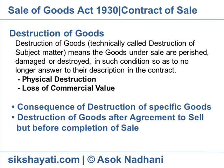Example: On 5th October 2008, K agrees to sell his Toyota car to P for Rs. 4 lakh on 1st December 2008. However, on 15th October 2008, the car was burnt without any fault of K or P. The contract of sale between K and P is void and P cannot be held liable for destruction of the car.